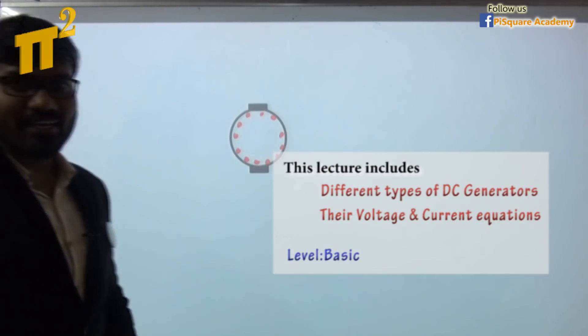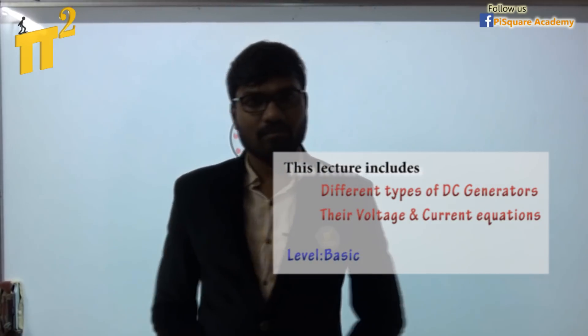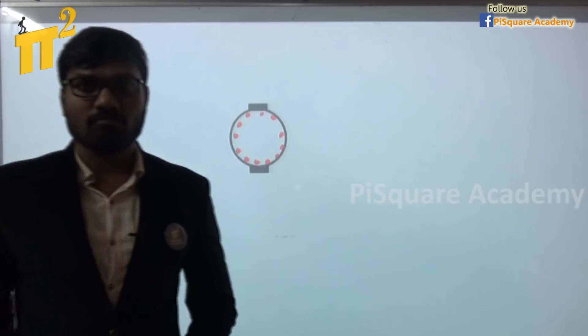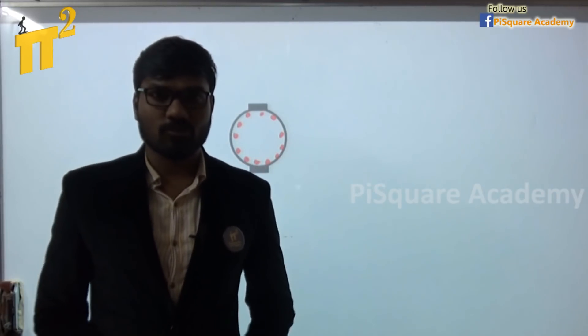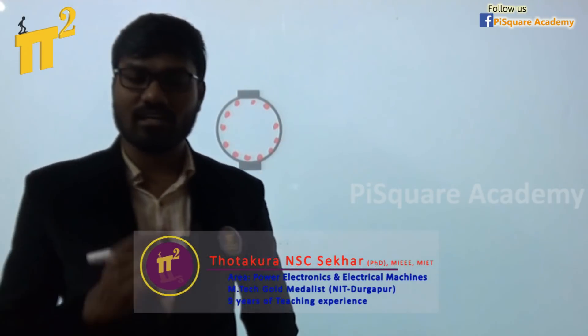The basic requirement of any DC machine, whether it is a DC motor or DC generator, is the same - that is armature winding and magnetic flux. We explained the operation of both motor and generator in one of our videos. Just check the video links in the description which will help you to clearly understand this concept.